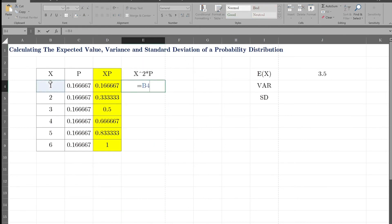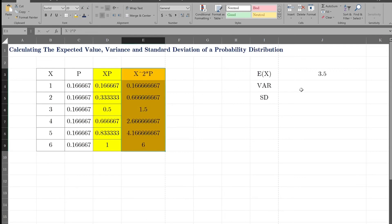So it'll be equals X squared times P. I drag that down, and here's my X squared P's that I need to use in the process of calculating my variance.